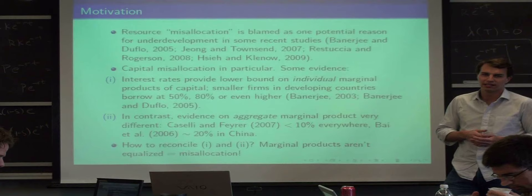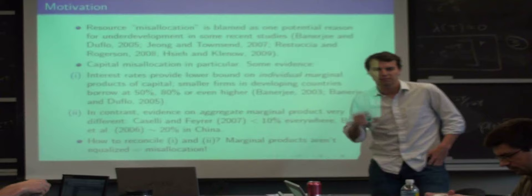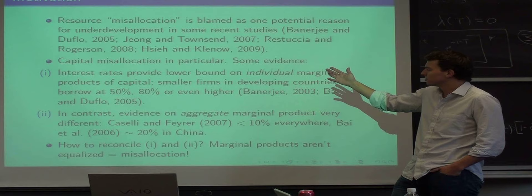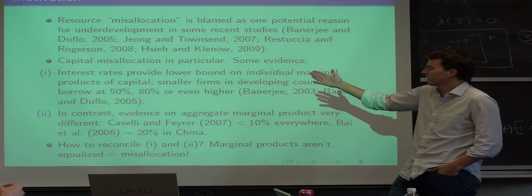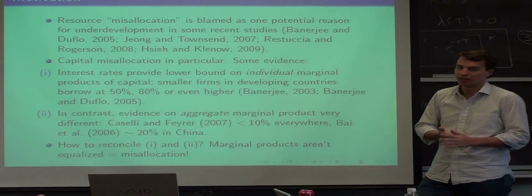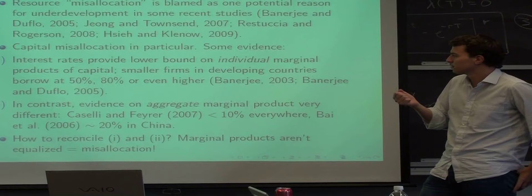There's this relatively new idea that it's not just the total number or amount of resources that matter, it's also the allocation of resources in the economy. So the question is, are marginal products of capital equalized? And there's pretty strong evidence that they aren't.